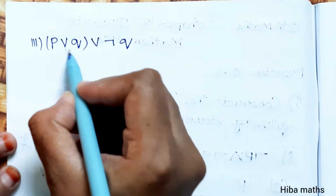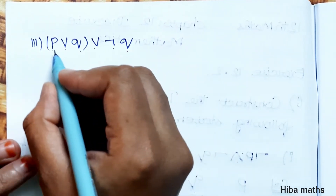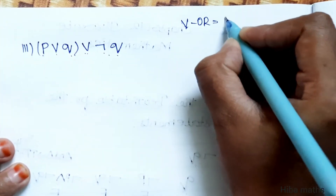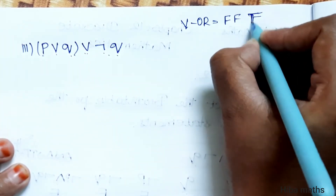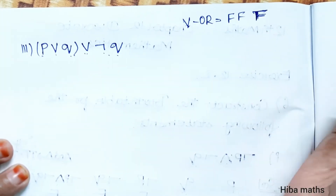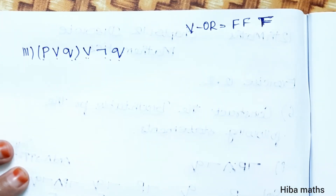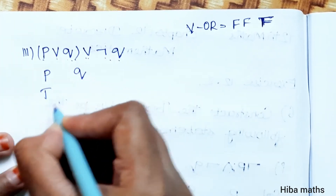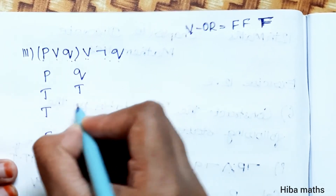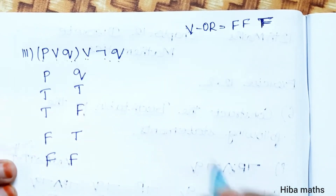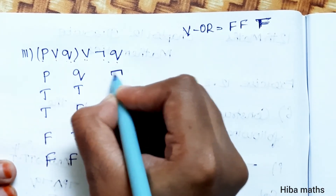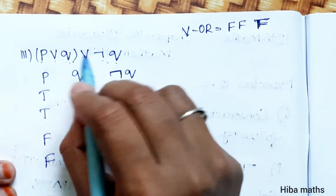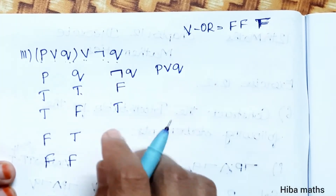Third subdivision: P OR Q OR NOT Q. First, NOT of Q: 2 false is false, 1 false is true, 2 true is true, 2 false is false. P and Q are 2 variables: P with 2 true and 2 false, Q true and false alternating. NOT of Q is the inverse of Q — true is false, false is true. Now we have two values: P OR Q and NOT Q.